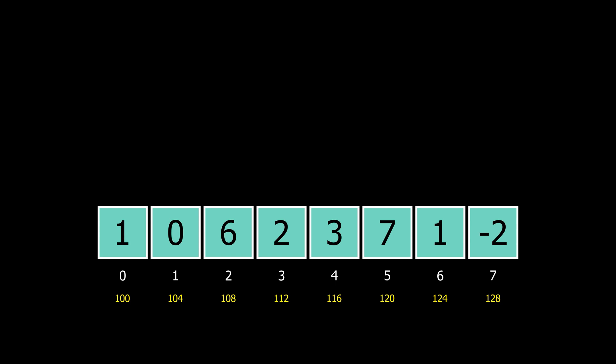This contiguous nature of arrays makes accessing the elements very fast. We can access any element in constant time using this formula: Address of element equals base address plus index times size of each element.